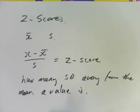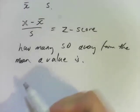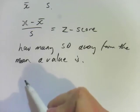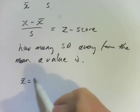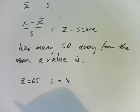So for example, if we had the previous example of x bar equals 65 and standard deviation equals 14, and I said I wanted to know the z-score for x equals 22.